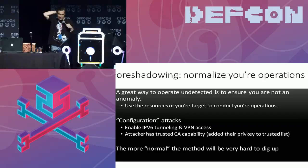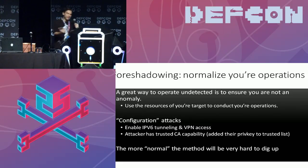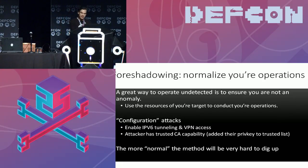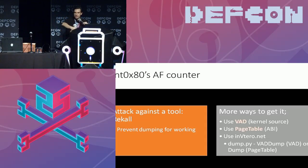I'm going to upload the slides to GitHub in my repo. Some foreshadowing: if you can normalize your tactics as an attacker into what's expected on the network, it's a lot harder to be seen — if you look like a regular VPN user, for instance. The counter to that is there are always additional sources, just like logs in memory, to take advantage of.